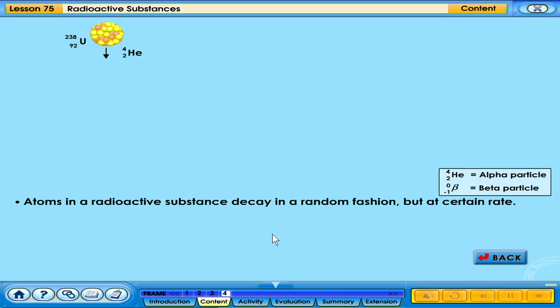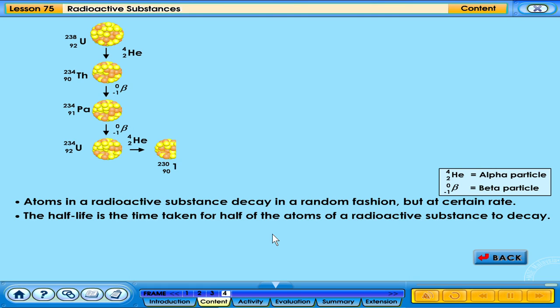Atoms in a radioactive substance decay in a random fashion but at certain rate. The half-life is the time taken for half of the atoms of a radioactive substance to decay.